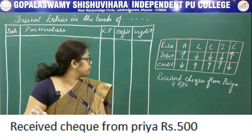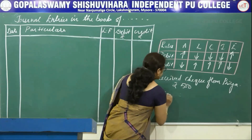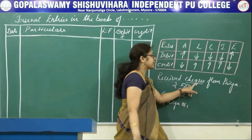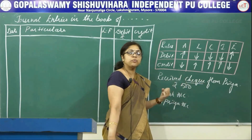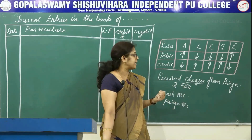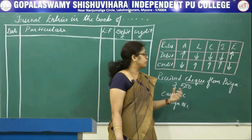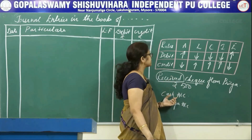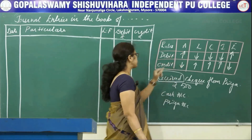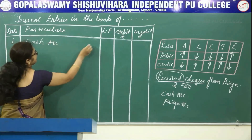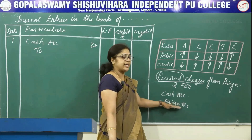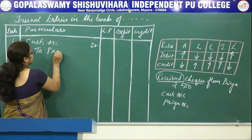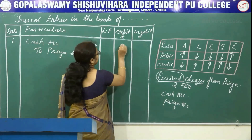Received check from Priya, rupees 500. First identify the two accounts: one is cash account, next one is Priya account. The word 'received' means cash is inflow into the business. Cash comes under asset. As it increases, it has to be debited. Debit the cash account. Priya is considered a customer — customer means debtor. Debtor comes under asset. When debtor reduces, asset reduces, it has to be credited. Credit the Priya account amounted to rupees 500, being check received from Priya.